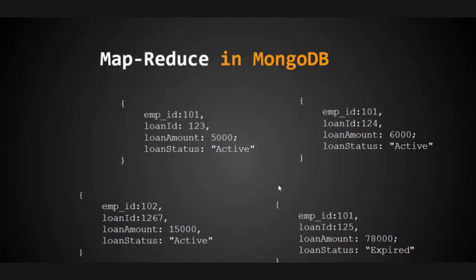What we are going to do in this example is find the total active loans per employee. First, the map function finds employee IDs and their active loans. Then the reducer goes through each loan and sums up all the loan amounts, so at the end we get each employee's total active loan amount.